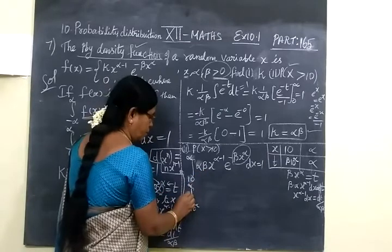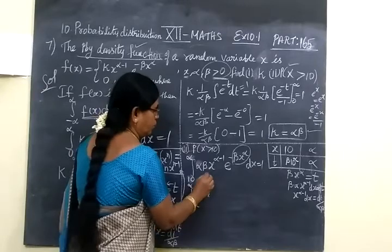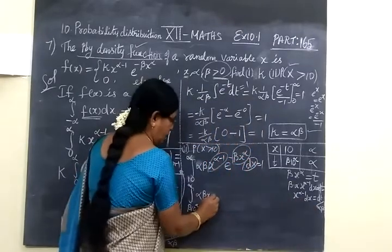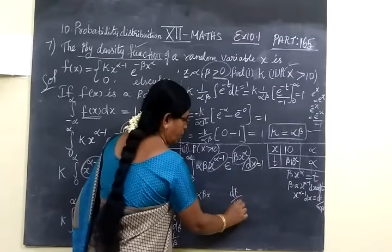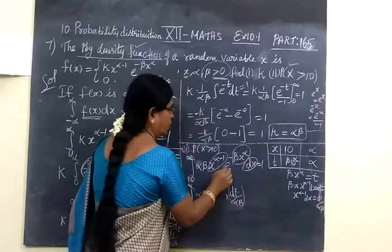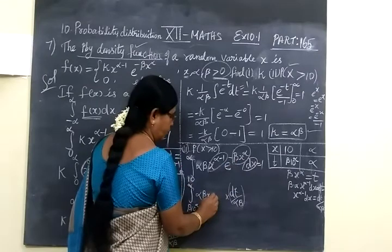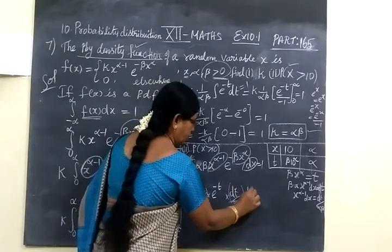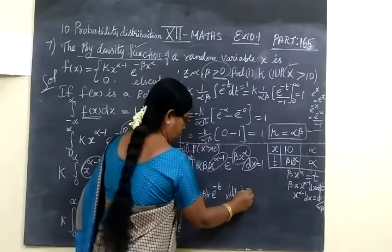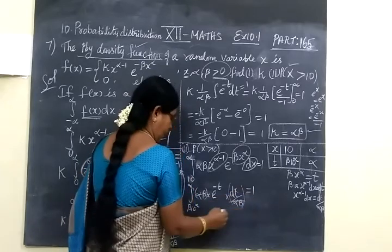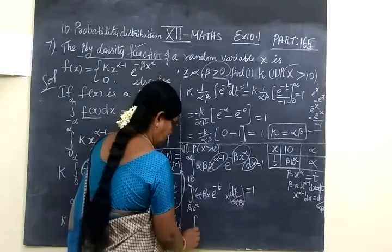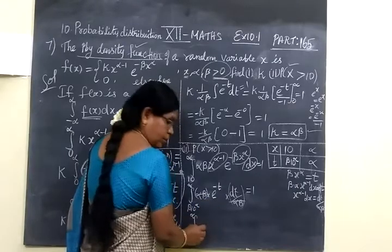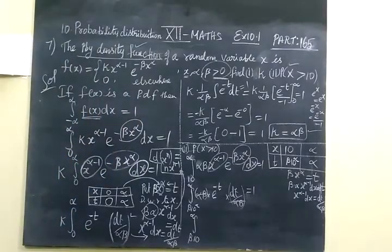Taking αβ outside and substituting, the αβ and 1/αβ cancel. The remaining integral is E power minus T from β·10^α to infinity, which equals the integral of e^(−T) dT. So we integrate E power minus T as E^(−T) divided by minus 1, with the limit from β·10^α to infinity.